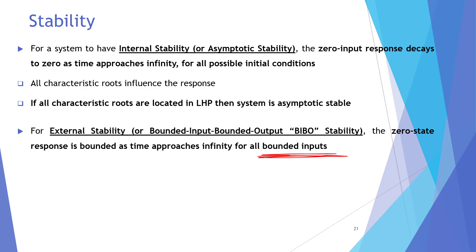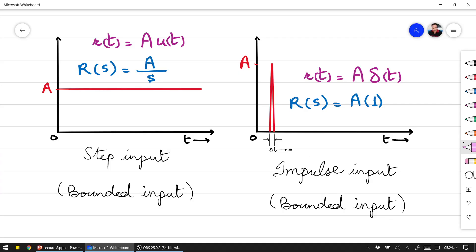Stable inputs are called bounded inputs. Some commonly used bounded input signals include the step input as the first example of a bounded input signal.